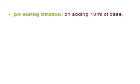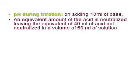The second point is the pH during titration, before reaching the equivalence point. For example, after adding 10 milliliters of sodium hydroxide, an equivalent amount of the acid is neutralized, leaving the equivalent of 40 milliliters of acid not neutralized, in a total volume of 60 milliliters of solution.